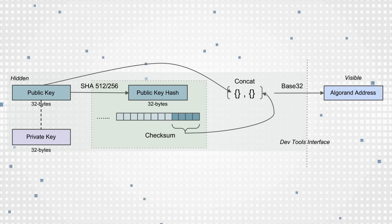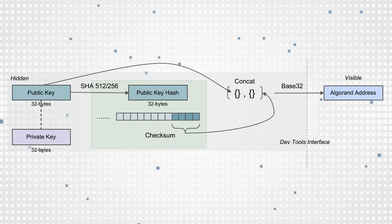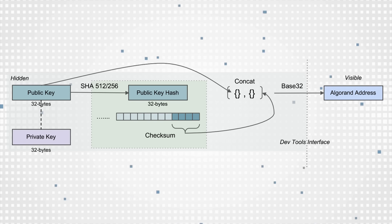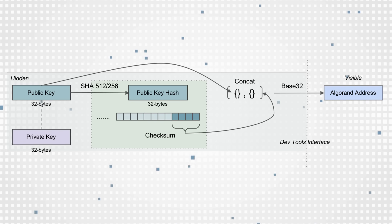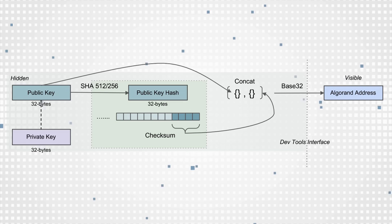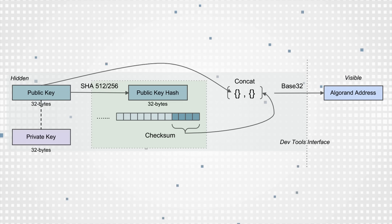Algorand account addresses are derived from public keys by adding a 4-byte checksum to the end of the public key and then encoding it in base 32, and the address is 58 characters long.